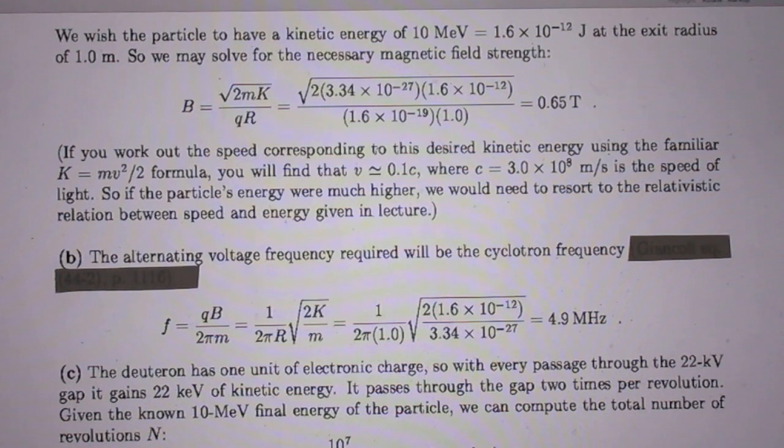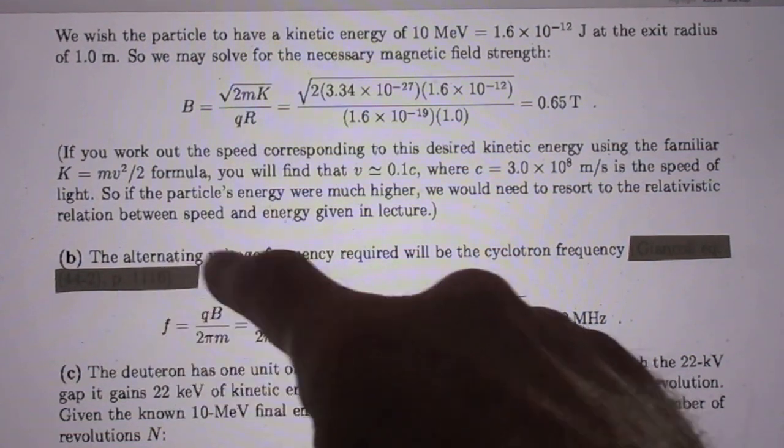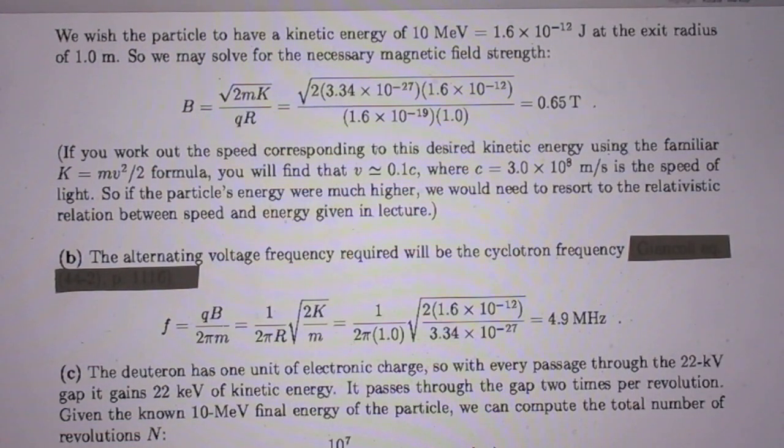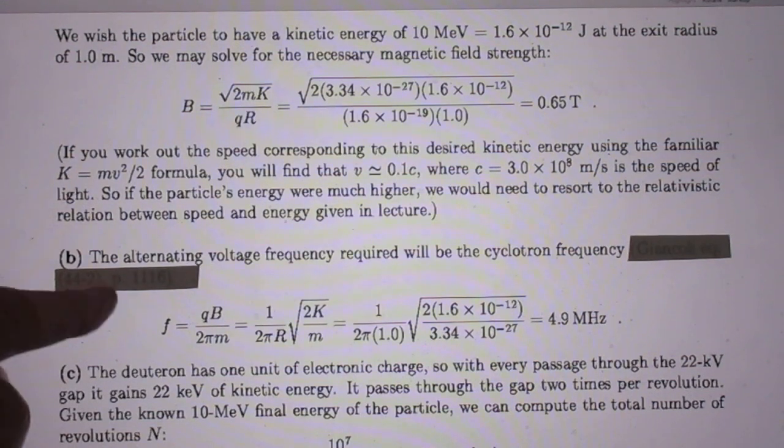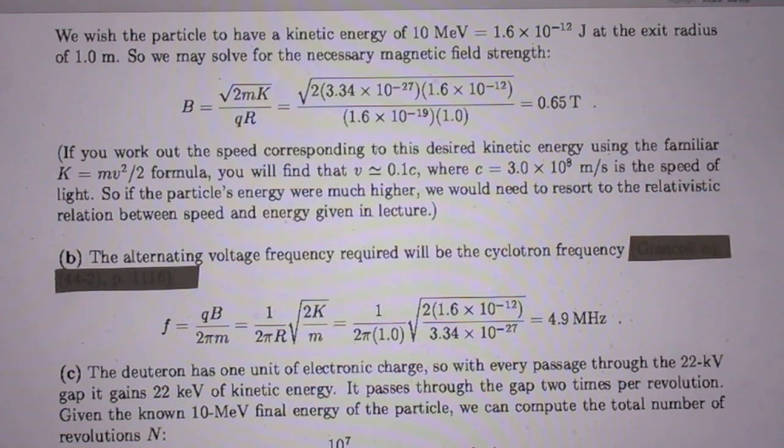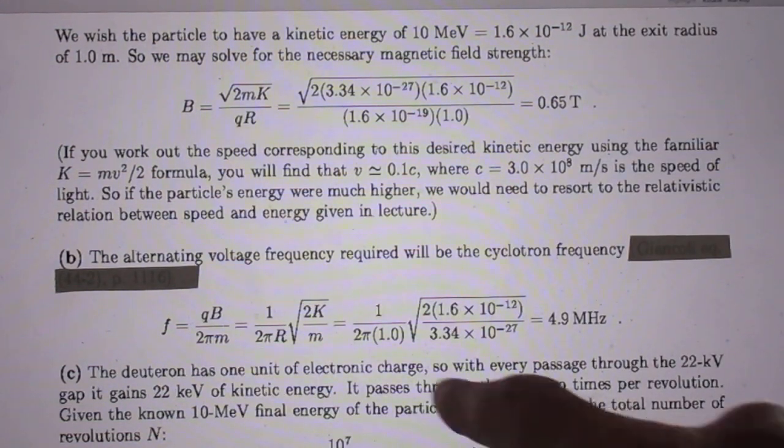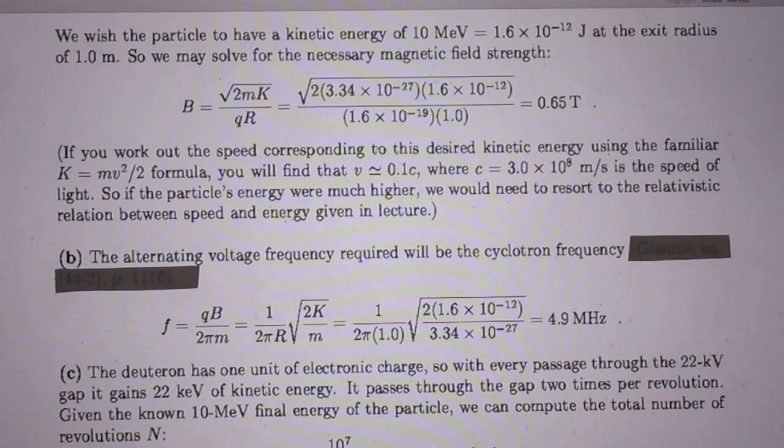So now the answer to question B. The alternating frequency required by the cyclotron frequency is given here and I derived that in my lecture 13. Q is again the charge, B is the magnetic field and M is the mass of the deuteron. And the outcome is then 4.9 megahertz.